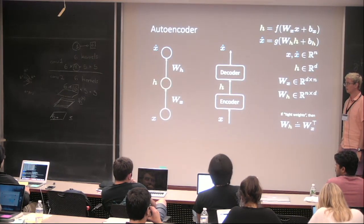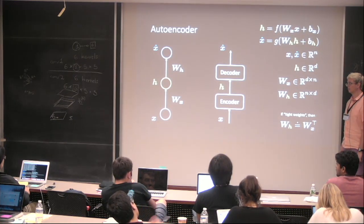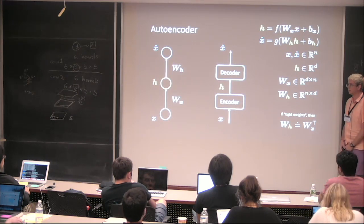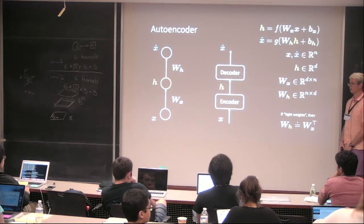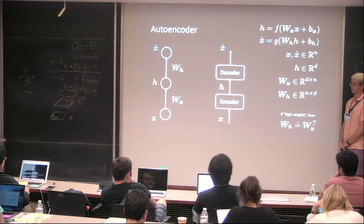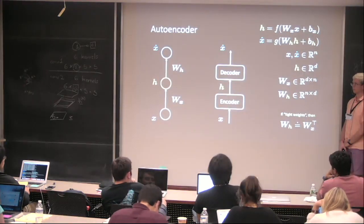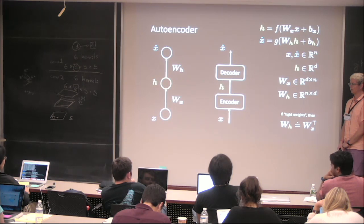There might be other mathematical arguments for using tied weights beyond just reducing parameters — the matrices being transposes of each other gives some additional mathematical properties. But having fewer parameters to optimize is at least one valid argument.